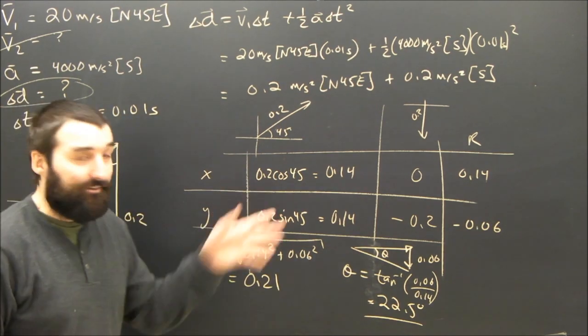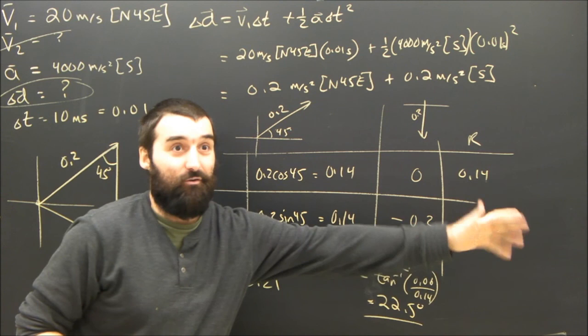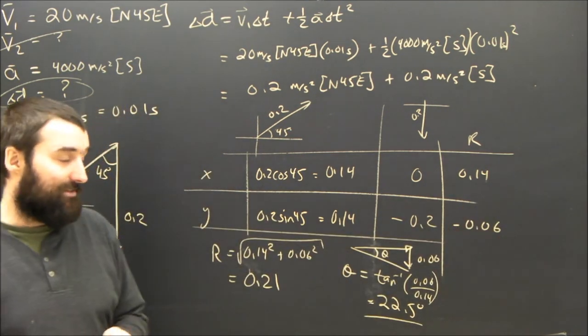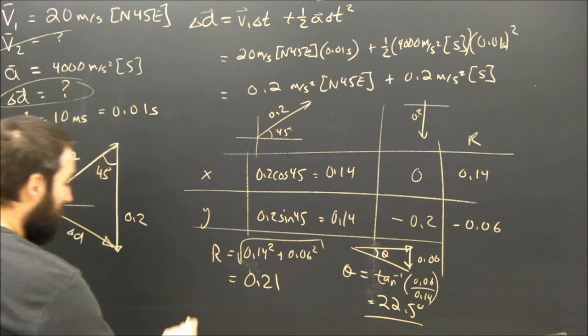Now, I kept all that in my calculator when I actually worked it out. I didn't round. It's not actually 0.06, it's 0.058 or something. And it came out to be exactly 22.5 degrees. So, no problem.